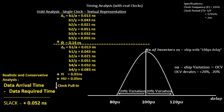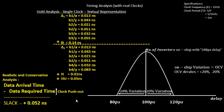Clock pull-in means reducing the delay of each clock cell in the launch path by 20%, which pulls the clock edge to the left. Clock push-out means increasing the delay of each clock cell in the capture path by 20%, pushing the clock edge to the right.